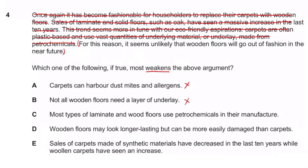Option C: most types of laminate and wood floors use petrochemicals in their manufacture — if they use petrochemicals, it's not environmentally friendly, so we can consider this one. Option D: wooden floors may look longer lasting but can be more easily damaged than carpets — that would suggest we shouldn't go for wooden floors, so consider this too. Option E: sales of carpets made from synthetic material have decreased while wooden floors have increased — this only talks about sales, so it's not really relevant.